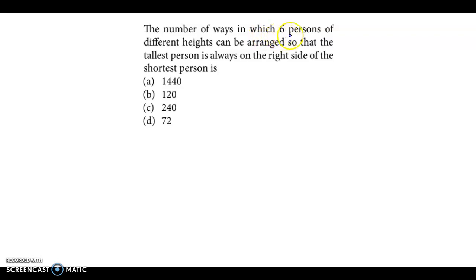The question is: the number of ways in which six persons of different heights can be arranged so that the tallest person is always on the right side of the shortest person.